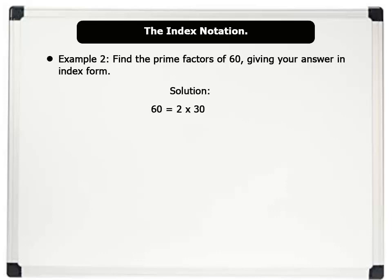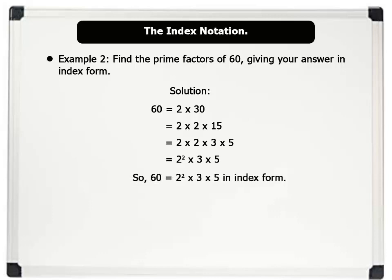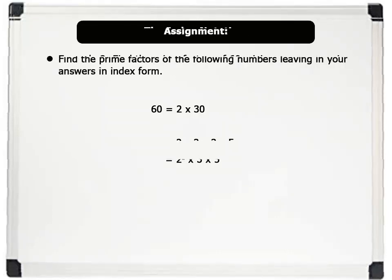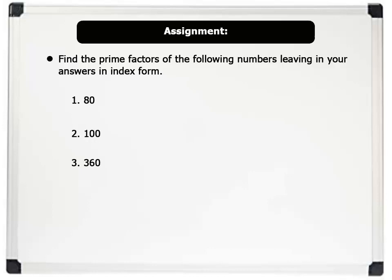Let us solve some problems. Example two: find the prime factors of 60, giving your answer in index form. Solution: 60 equals 2 times 30, equals 2 times 2 times 15, equals 2 times 2 times 3 times 5. So 60 equals 2 to the power of 2 times 3 times 5 in index form. Now pause this video, write these numbers in your notebook, and find their prime factors leaving your answers in index form.